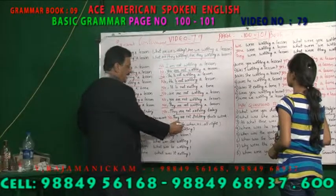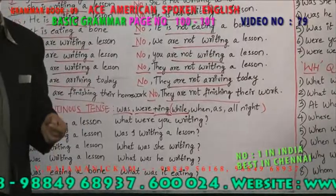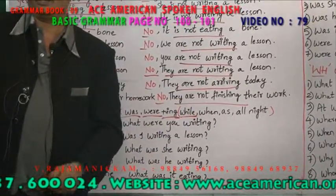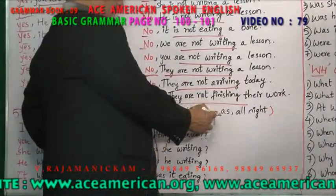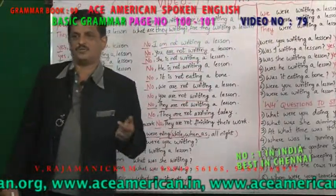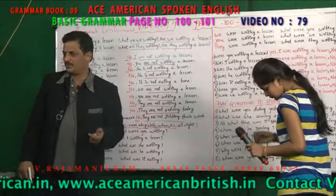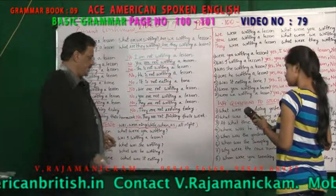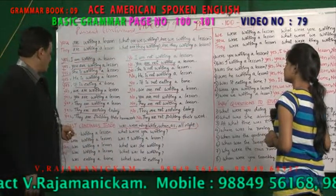The keywords for past continuous are: while — while I was watching television, my father came to my room. When — when I was studying in college. As — as you keep learning, as you keep reading the newspaper, you can speak much better. All night — all night I was working on the computer. These are the keywords.